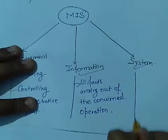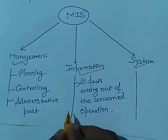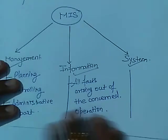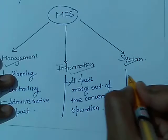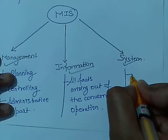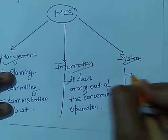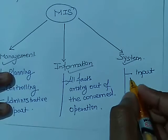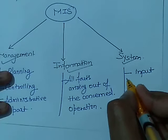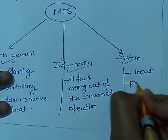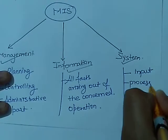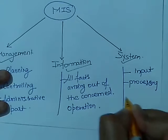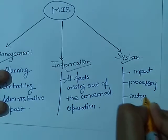Now, system. Data is processed with the help of a system. A system is made up of input, processing part, and output.